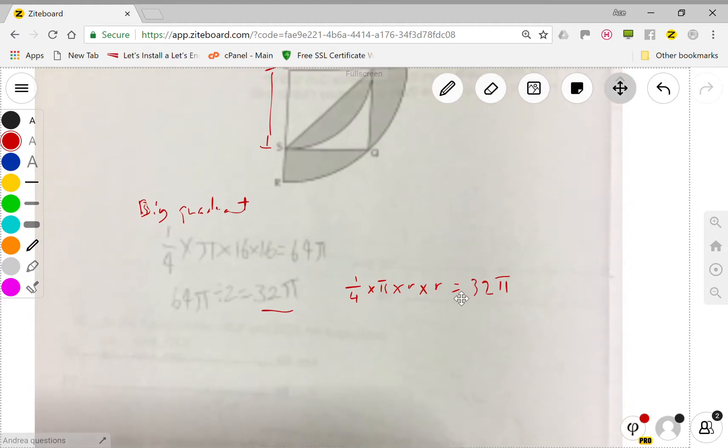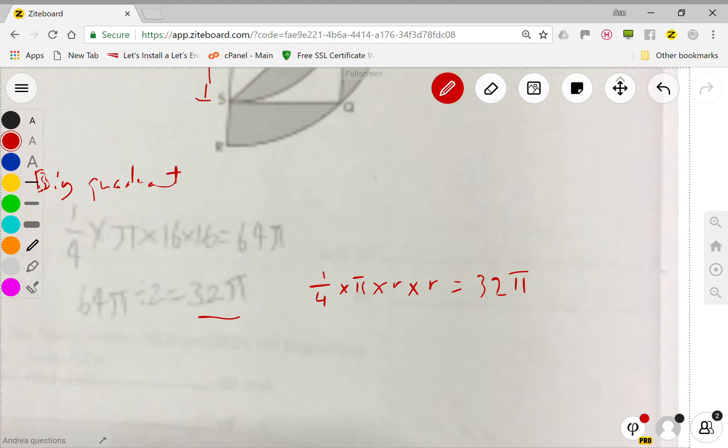So how do I find r? This is a bit of secondary school. I can remove the π, then because it's one quarter, I want to find the whole circle, I can times four. So r times r is actually equals to four times 32, this is 128. So r equals to square root 128.